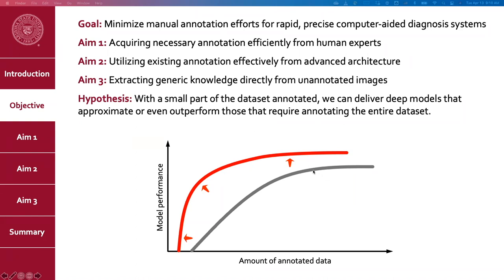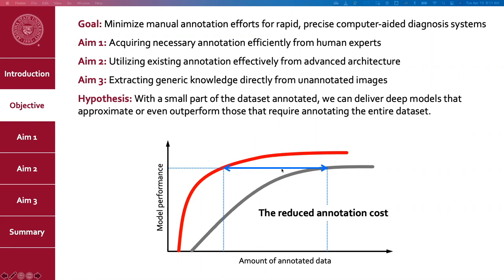Overall, we hypothesize that with a small portion of the dataset annotated, we can deliver a deep model that can match or even outperform those models requiring the entire dataset to be annotated. This hypothesis can be interpreted in two ways: first, maintaining the same performance, our method requires less annotation — the gap represents the annotation cost reduction. Second, using the same amount of annotation, our method achieves much higher performance. I will demonstrate the annotation efficiency of our method throughout the rest of the talk.